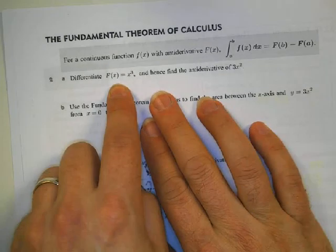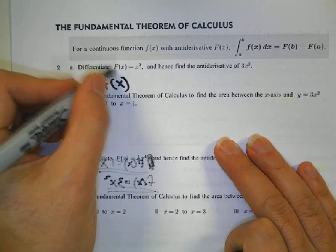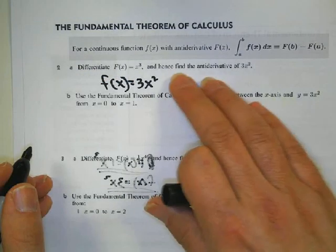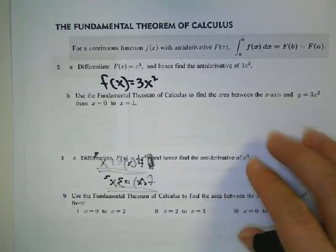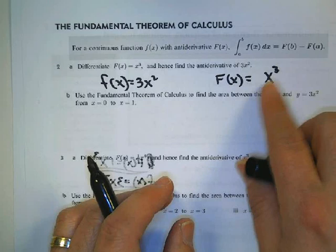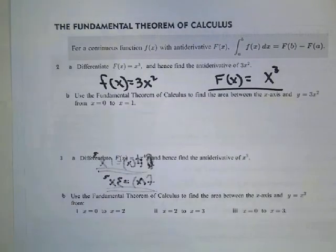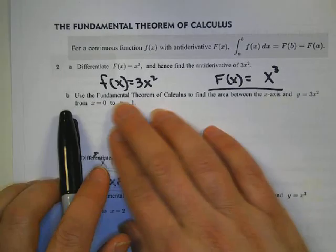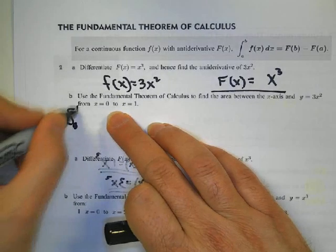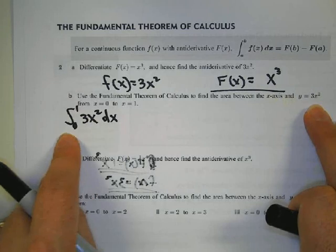Take the derivative of x cubed. I'm going to use lowercase f because capital F is the antiderivative. The derivative of x cubed is equal to 3x squared. Hence, find the antiderivative of 3x squared. The antiderivative of 3x squared: the power increases by 1, it becomes 3, and then we have the reciprocal one third times that, giving us x cubed. Use the fundamental theorem of calculus to find the area. The integral goes from 0 to 1 of 3x squared dx.